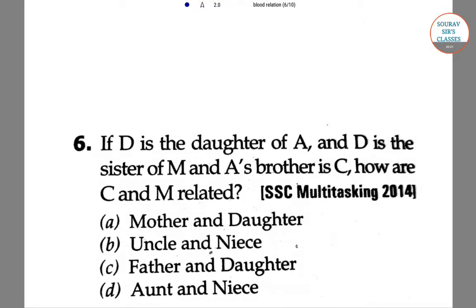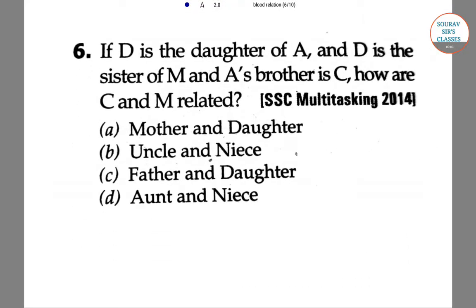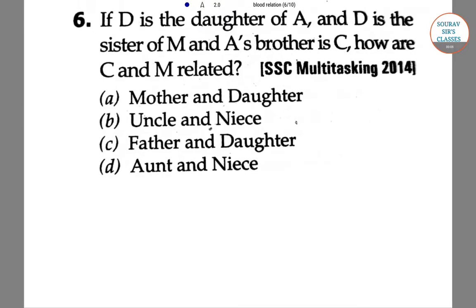Hello students, welcome to Sources Classes. This video is on blood relations. The next question: D is the daughter of A, and D is the sister of M. Then A is the brother of C. How are C and M related? Here we draw the tree diagram according to the given data.